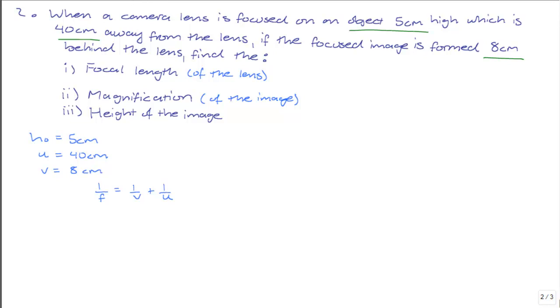We know both U and V. We're asked to find F, which we can do by substituting. So we know that 1 over F is equal to 1 over 8 plus 1 over 40, which is equal to 5 plus 1 divided by 40, which is equal to 6 over 40.